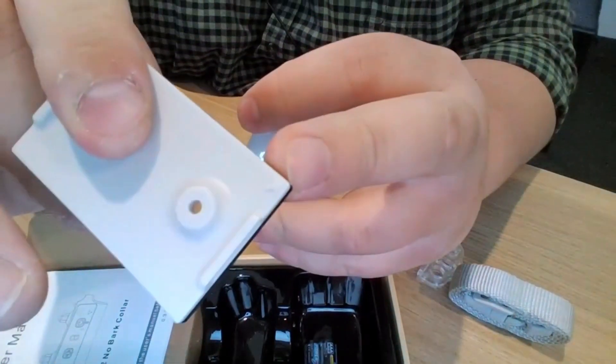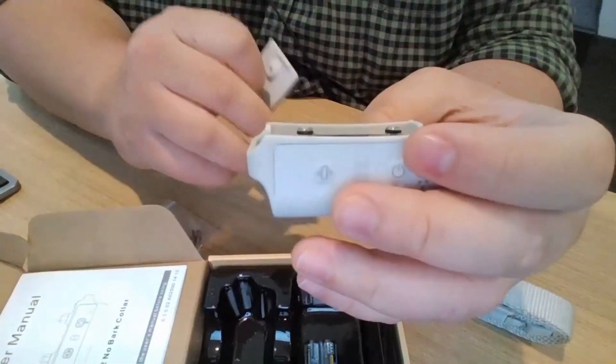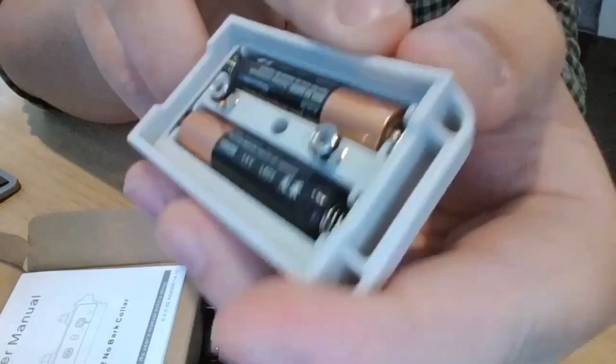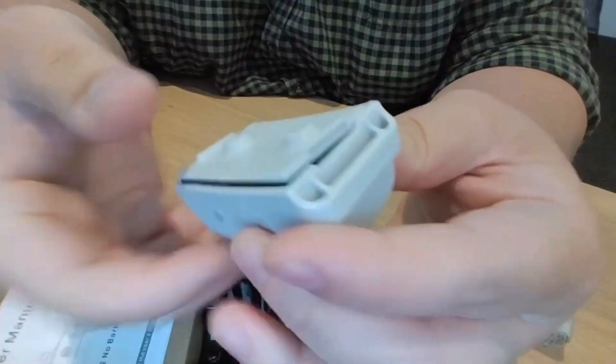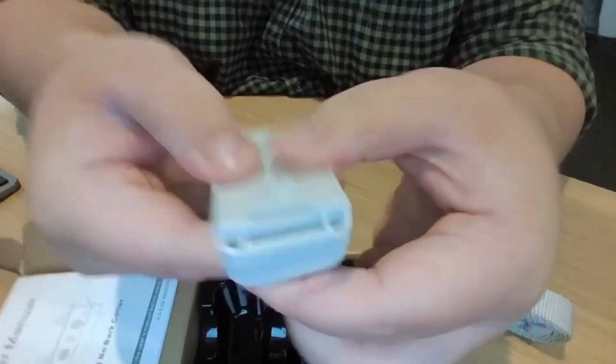Inside they do come with this little teeny tiny arrow there. That one just lines up to the little dot that's actually on the collar display there. Take the two, put them together, and just seal it tight.